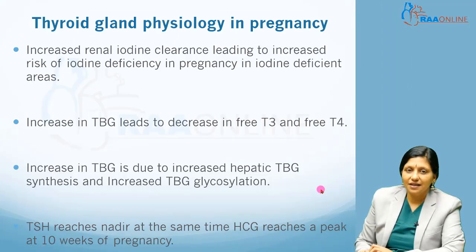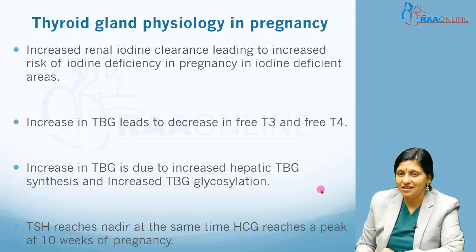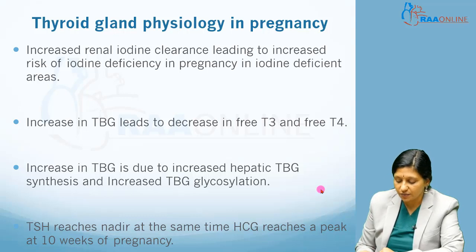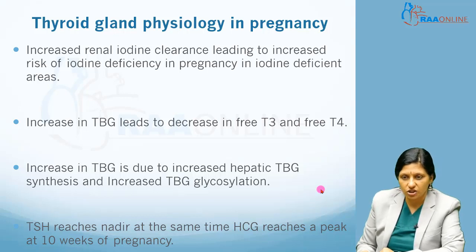Increased renal iodine clearance leads to an increased risk of iodine deficiency in pregnancy in iodine-deficient areas, and an increase in thyroid binding globulin leads to a decrease in free T3 and T4 in pregnancy. In pregnancy there is an increase in TBG due to increased hepatic TBG synthesis and increased TBG glycosylation, which makes it not amenable for clearance. TSH reaches its nadir at the same time HCG reaches a peak at 10 weeks of pregnancy.